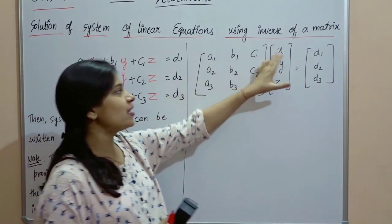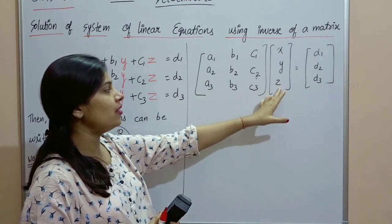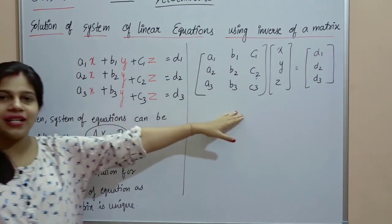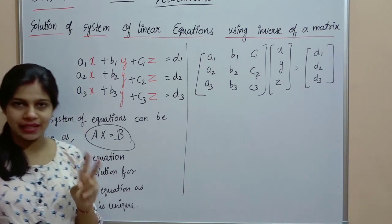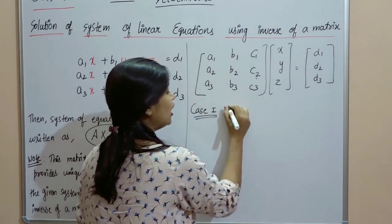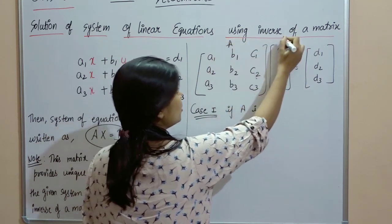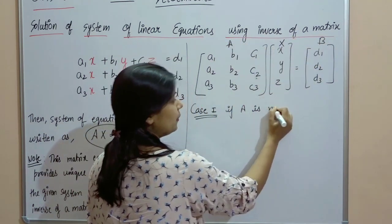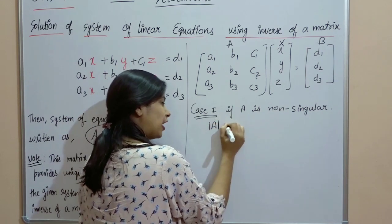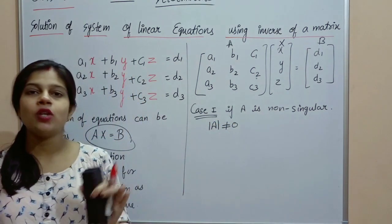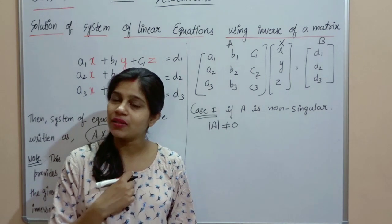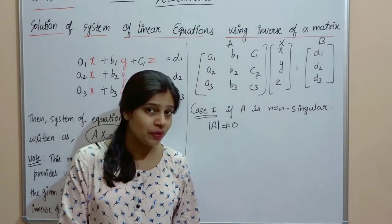Multiply karo: A1·X + B1·Y + C1·Z = D1 a gaya — yehi cheezein aa rahi hain. So main isko AX = B form mein matrix form mein likh sakti hun. Ab dekho, ab ismein 2 cases aate hain. Case 1: if A is non-singular matrix. Agar A non-singular matrix hoti hai means determinant of A not equals to 0.